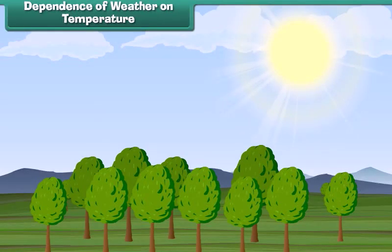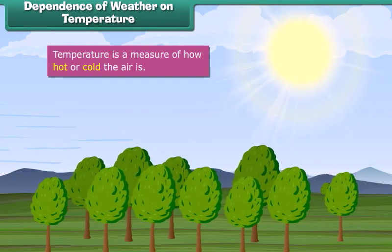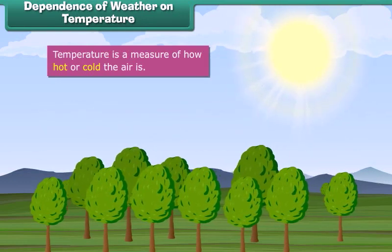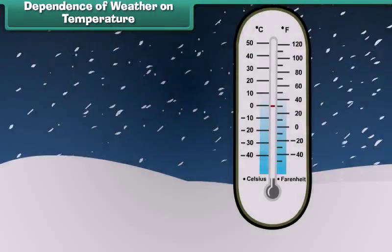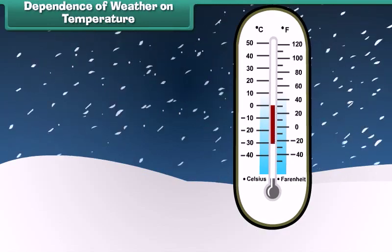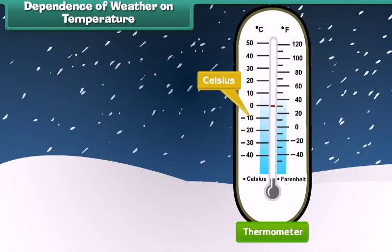We all know that temperature is a measure of how hot or cold the air is. It depends upon the energy it receives from the sun. Temperature is measured with the help of a device called a thermometer and it is calculated in degrees Celsius and degrees Fahrenheit.